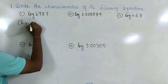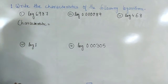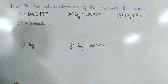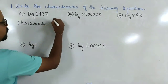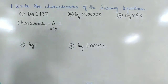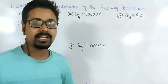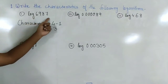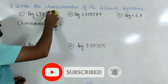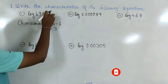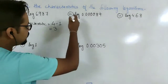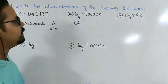For the number 6987, there is no decimal point, so we count all 4 digits. The characteristic is 4 minus 1, which equals 3. We count all 4 digits because the formula counts digits before the decimal point. Since there is no written decimal point, it is implied at the end, giving us 4 digits before it. So the characteristic is 3.